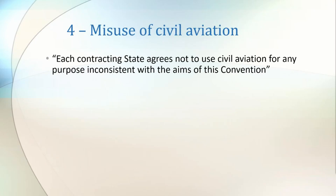Article 4 states that each contracting state agrees not to use civil aviation for any purpose inconsistent with the aims of this Convention. This is aimed at preventing states from using civil aircraft for performing military duties.